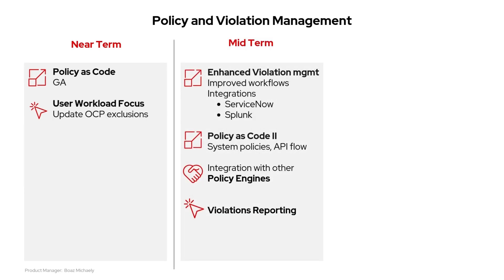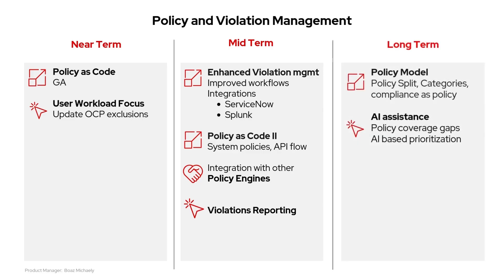Moving on to mid-term goals: enhanced violation management integrates with tools like ServiceNow and Splunk for better tracking and resolving of policy violations. Policy as code is set to extend policy management to include system-level policies and API workflows for more flexibility. Integration with other policy engines will support third-party policy systems so customers can integrate external engines with ACS. Violations reporting improves reporting to make compliance tracking easier and more visible. For long-term goals, policy model enhancements separate policy rules from behaviors like notifications, enforcement, and scope, making policies more scalable and flexible. Lastly, AI assistance for policies uses artificial intelligence to spot policy gaps and suggest priorities for improvement.